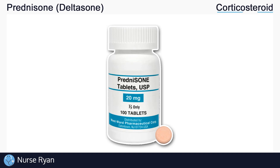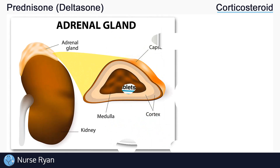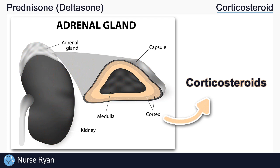Prednisone belongs to the corticosteroid drug classification. To understand how prednisone works, let's first review what corticosteroids are and how they work. Corticosteroids are types of steroids that are produced in the adrenal glands, which are the glands that sit right above the kidneys. To be specific, corticosteroids are produced in the adrenal cortex, which is the outer region of the adrenal glands.